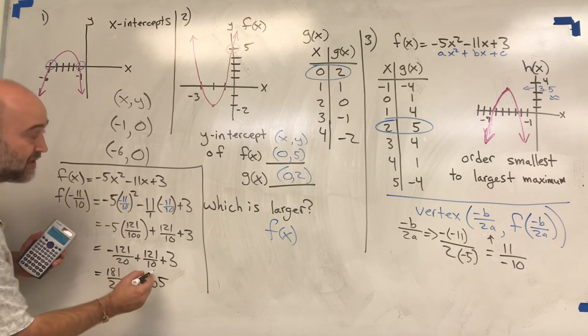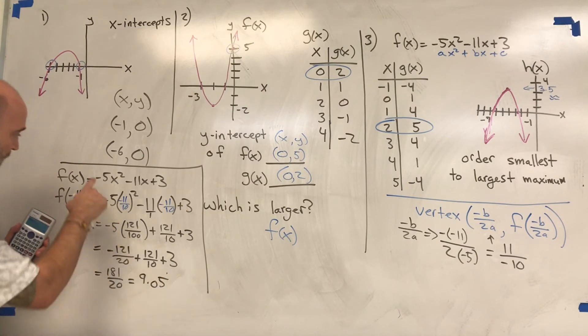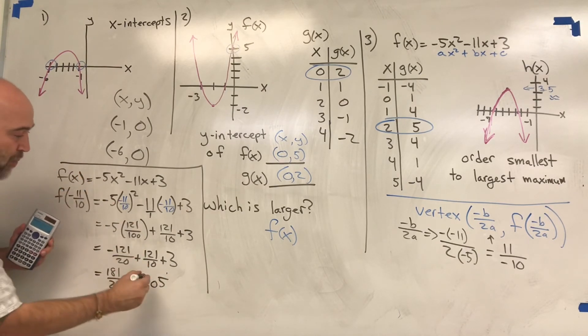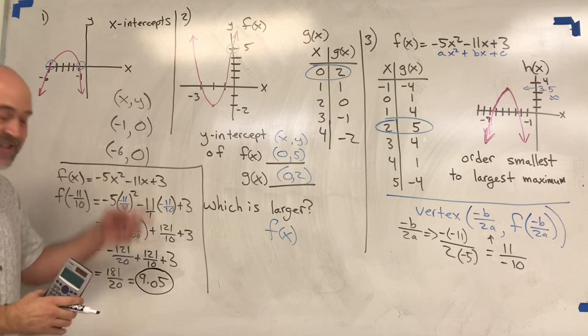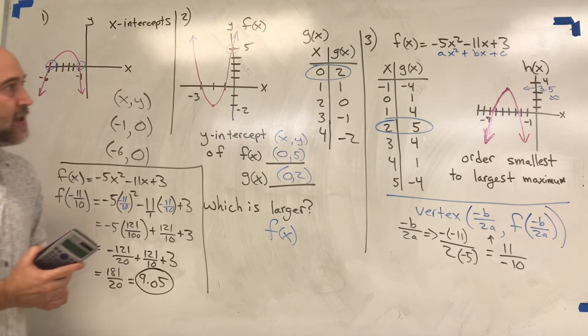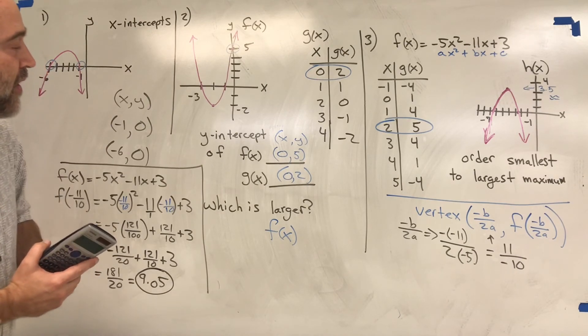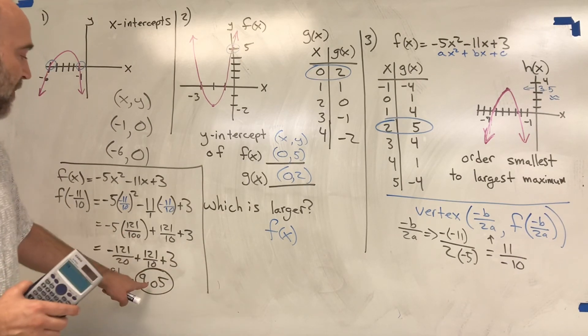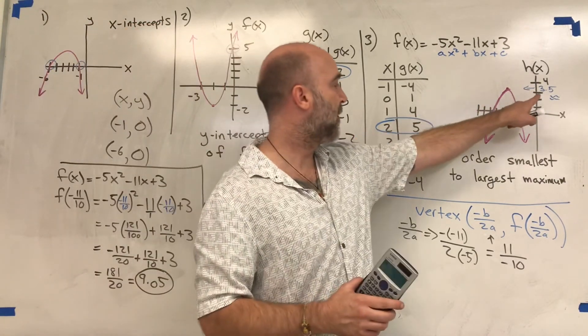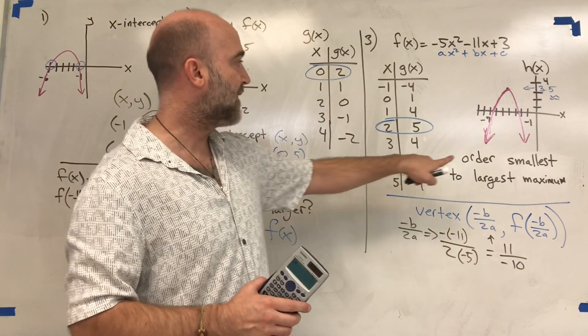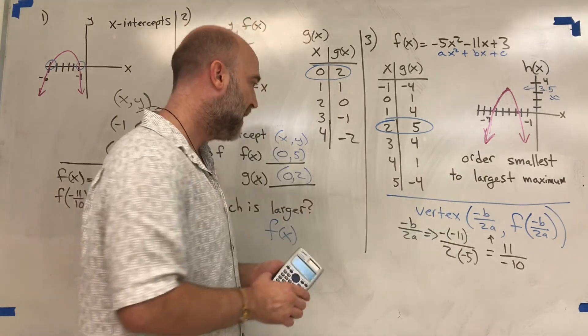So this is the y, the output, the maximum on that parabola. Looking at the other two, we got 9.05, we have 5, and we have 3.5. We're asked to order it from smallest to largest.